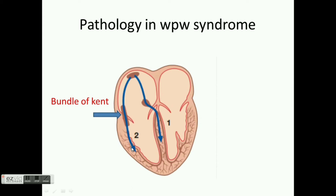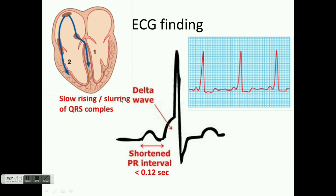ECG finding. As the impulse bypasses the AV node and reaches the ventricle through the bundle of Kent, it causes early depolarization. This causes shortening of the PR interval to less than 0.12 seconds. There is a delta wave formation. As the impulse reaches early but is conducted slowly by the ventricle, cell to cell — so the impulse reaches early but travels or spreads slowly.